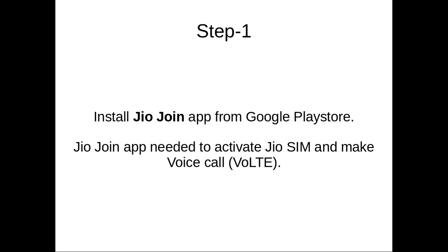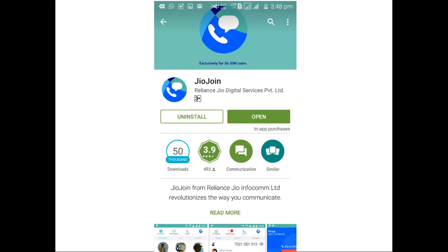Step 1. First we need to install the JioJoin app from Google Play Store. This JioJoin app is needed to activate your Jio SIM and make voice calls, so you can download it from Google Play Store.